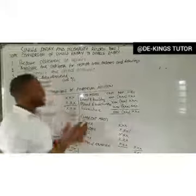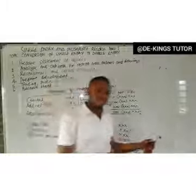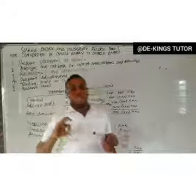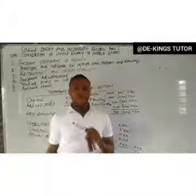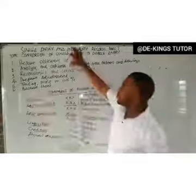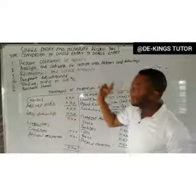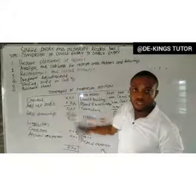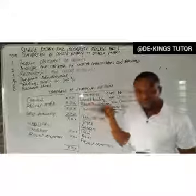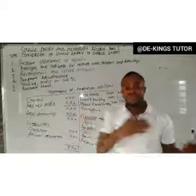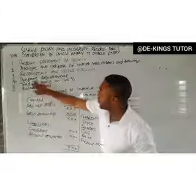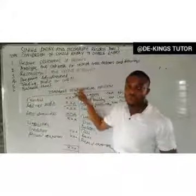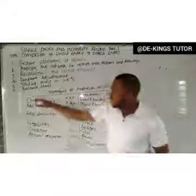With that, we have been able to convert single entry to double entry and prepare final accounts with incomplete records. Summary of steps: Step 1 — prepare statement of affairs; Step 2 — analyze the cash book for receipts from debtors and drawings; Step 3 — reconstruct the control account to get sales and purchases using the sales ledger and purchases ledger; Step 4 — prepare adjustments; Step 5 — prepare the trading profit or loss account (income statement); Step 6 — prepare the balance sheet.